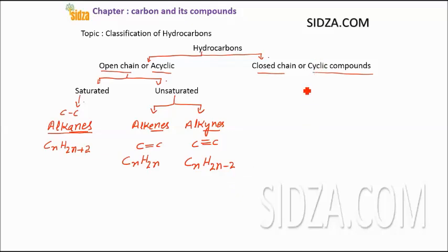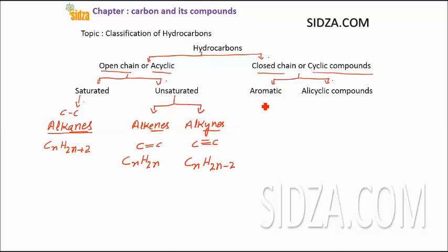Closed chain or cyclic hydrocarbons are further of two types. We can classify them into two main categories: aromatic compounds and alicyclic compounds. Aromatic compounds contain at least one benzene ring, or compounds which resemble benzene — these are called aromatic compounds.